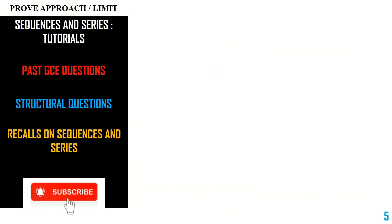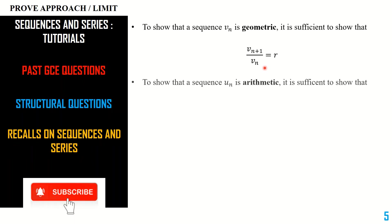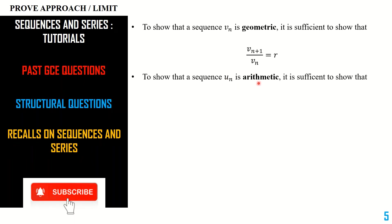Now, how to prove certain things about sequences. To show that a sequence Vn is geometric, it is sufficient to show that the ratio between the (n+1)th term and the nth term equals a constant — the common ratio. To show that a sequence is arithmetic, you need to show that the difference between the (n+1)th term and the nth term equals a constant — the common difference.